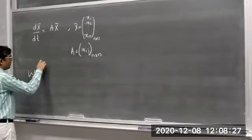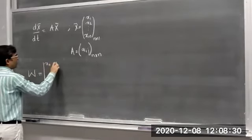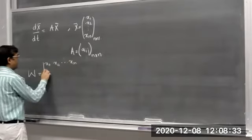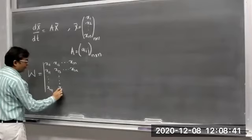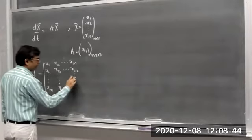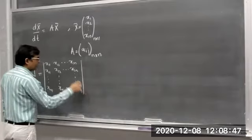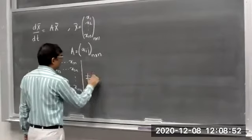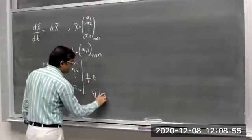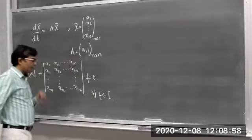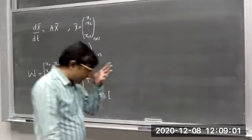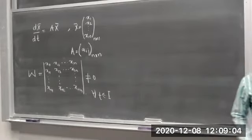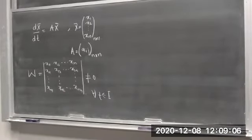The Wronskian was defined as the determinant with entries x11, x12, ..., x1n in the first row, x21, x22, ..., x2n in the second row, and so on through xn1, xn2, ..., xnn. We discussed that the Wronskian should not be zero for all values of t belonging to some interval I. This was the definition of the Wronskian to check whether a given set of n solutions are linearly independent or not.